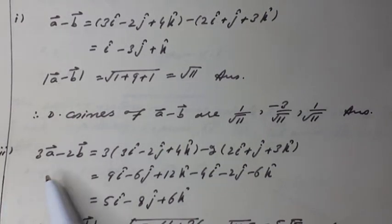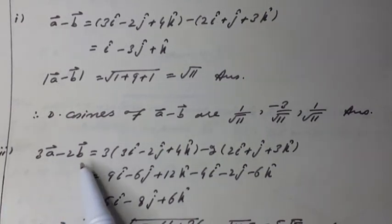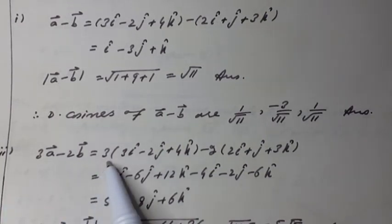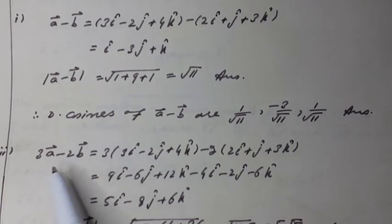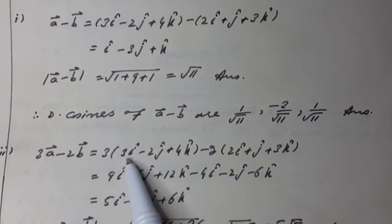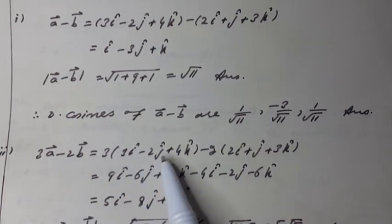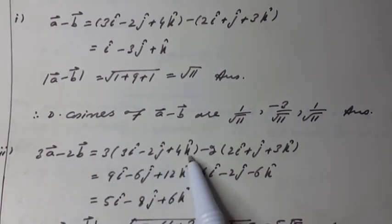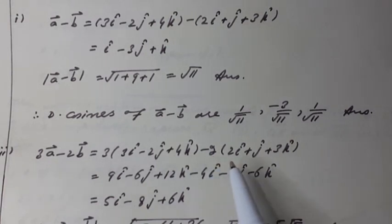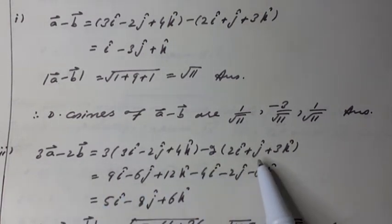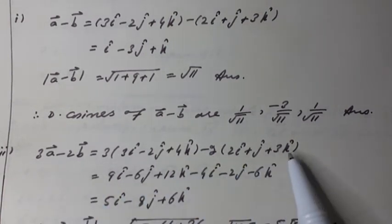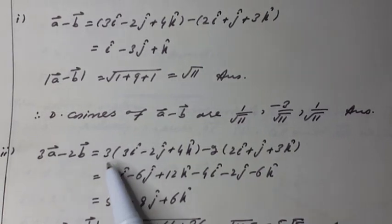Second part: 3a vector minus 2b vector can be written as 3 multiplied by (3i unit vector minus 2j unit vector plus 4k unit vector) minus 2 multiplied by (2i unit vector plus j unit vector plus 3k unit vector).